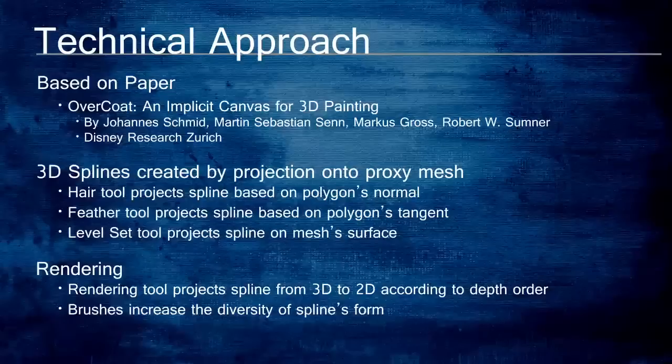Overcoat for Maya has the same three tools for creating 3D strokes as Overcoat. Each of these tools works by projecting a 2D screen space stroke as a 3D spline onto a proxy mesh. The initial click must intersect the mesh surface in order to know where to project. The hair tool projects a spline based on the first-click polygon's normal. The feather tool works similarly, but uses the first-click polygon's tangent. The level set tool projects a spline based on the level set defined by the surface of the mesh. The user can adjust which level they want to paint on to create a layering effect.